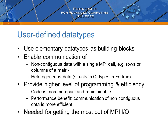MPI allows us to define new data types to use for the data type argument when inbuilt elementary types do not suffice. Examples of these include a matrix row, a sub-block of a multidimensional array, or structs. The motivation for using them includes program readability and compactness, but also performance. If a data structure which we need to communicate is non-contiguous in memory, defining a user-defined data type for it will outperform simple packing and especially multiple routine calls.